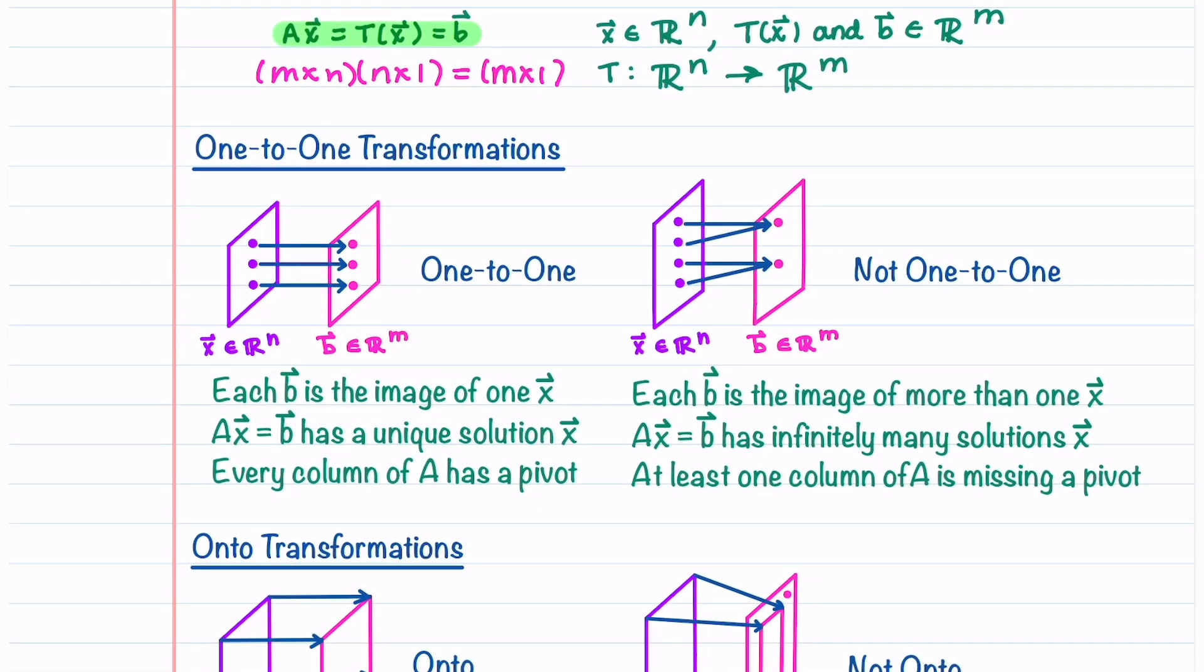Let's first look at one-to-one transformations. A transformation is one-to-one if each b is the image of one x. This means that Ax equals b has a unique solution x and every column of A has a pivot.